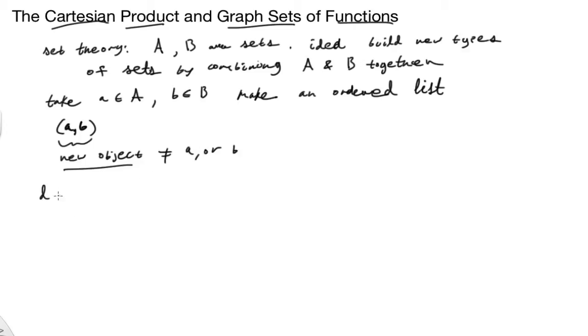So what we want to do now is define this as a formal procedure. The Cartesian product. The Cartesian product has the symbol A cross B. That's the symbol right there.